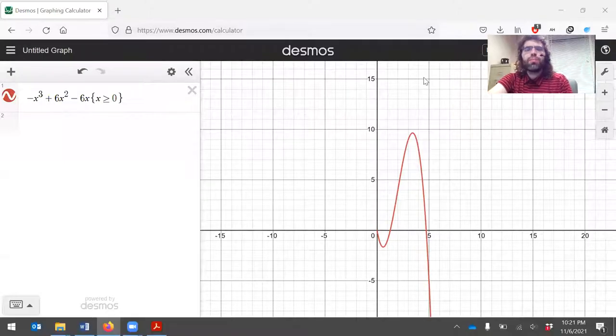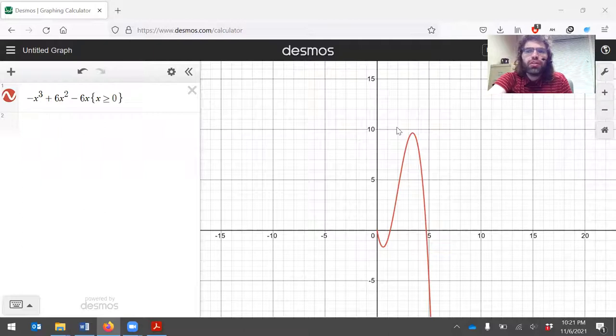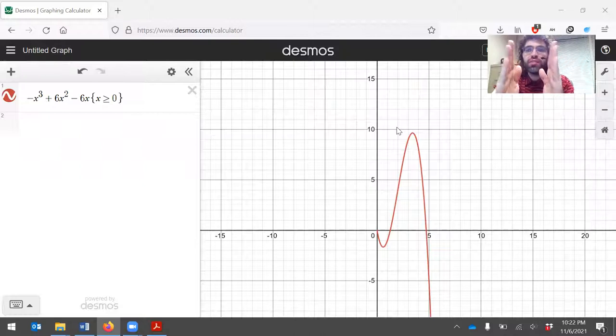This is where a graph is going to be useful. Because think what this graph is telling us. First, it's telling us that the maximum we're looking for exists. And there was no guarantee of that. Remember, the extreme value theorem only applies on a closed interval. This is not a closed interval. So we know now that the thing we're looking for exists.